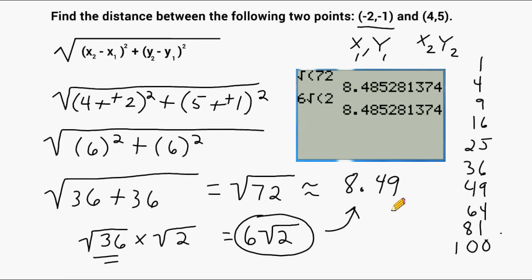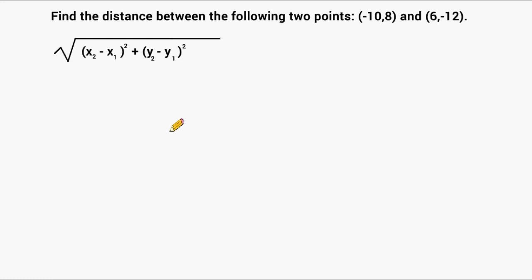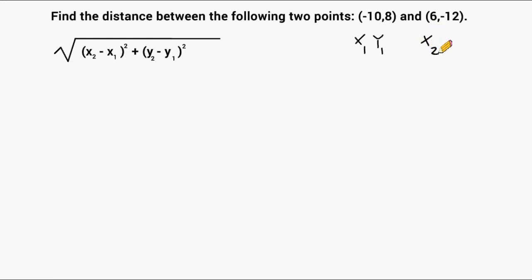Let's do another example. The first thing we always do is identify x1, y1, x2, and y2. So negative 10 is going to be our x1, positive 8 will be our y1, positive 6 is going to be our x2, and negative 12 is going to be our y2.